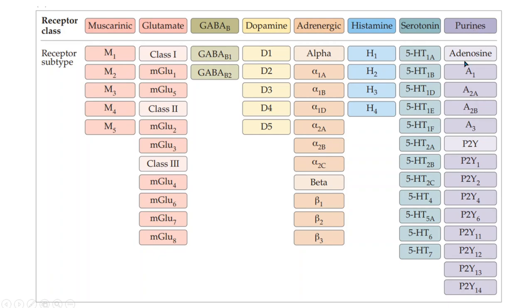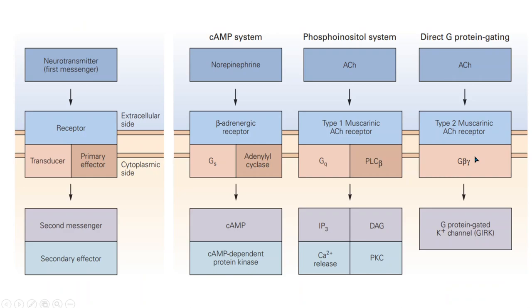Histamine has four types of metabotropic receptor. Earlier we saw that serotonin also has ionotropic receptors, and it also has metabotropic receptors — in fact it has seven types of receptors, among which the 5-HT3 series are ionotropic and the remaining are metabotropic. Purines also have metabotropic receptors: two classes, those which can be activated by adenosine alone, and those which can be activated by ATP.